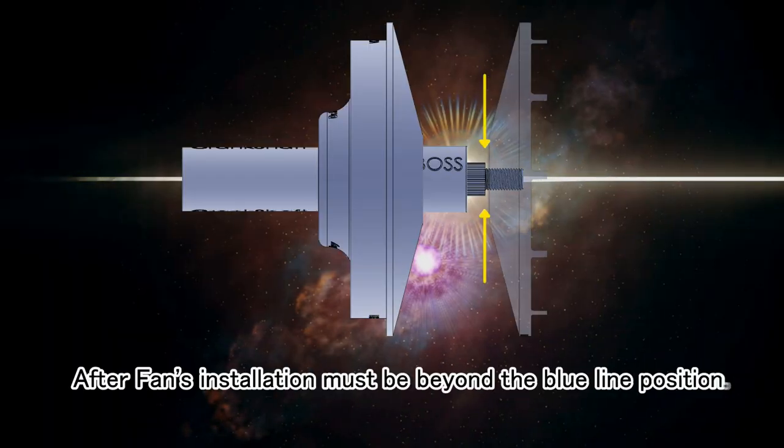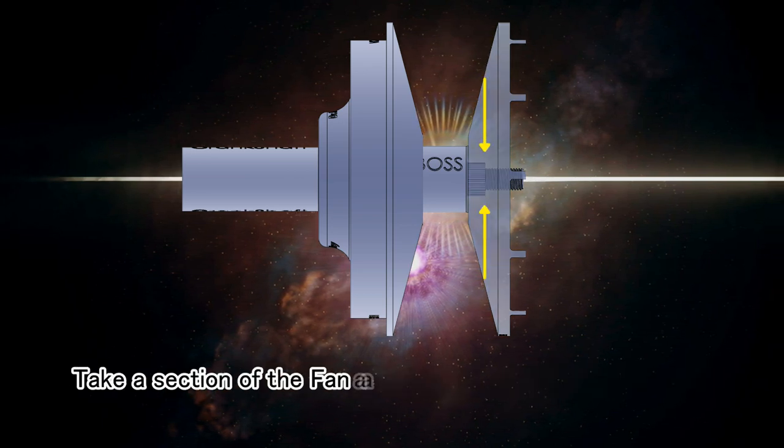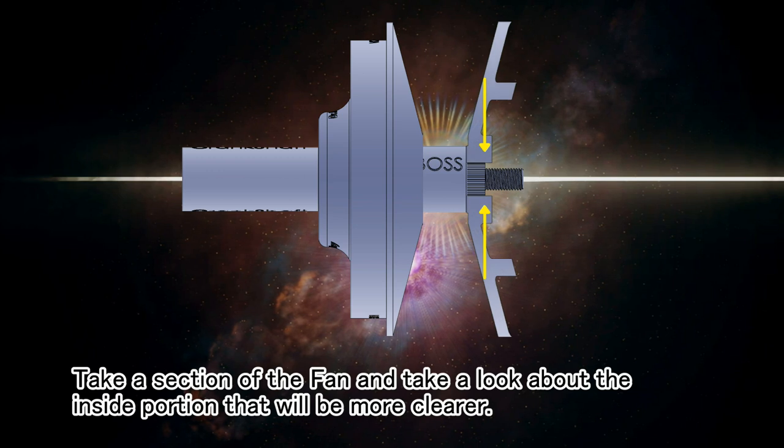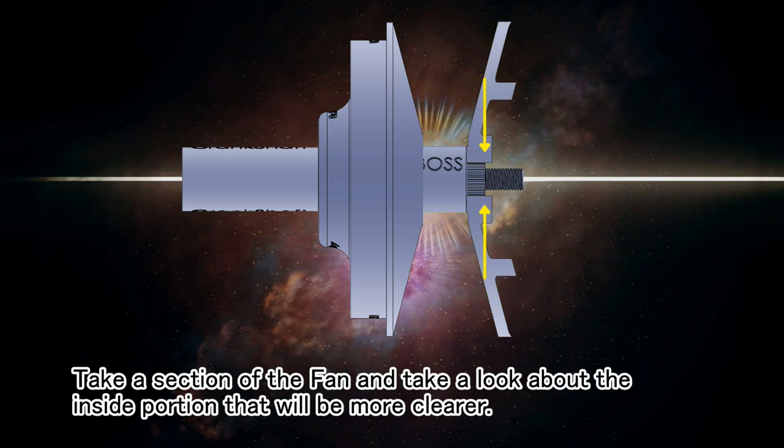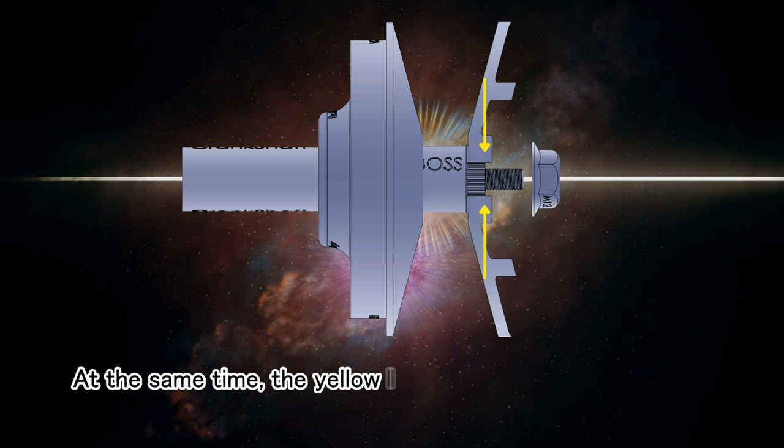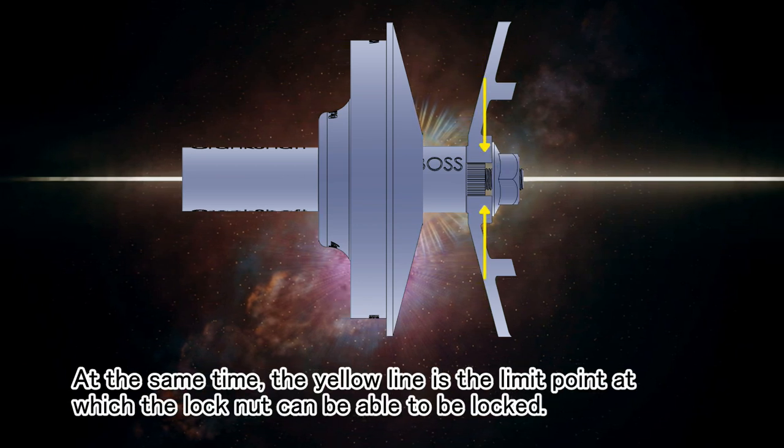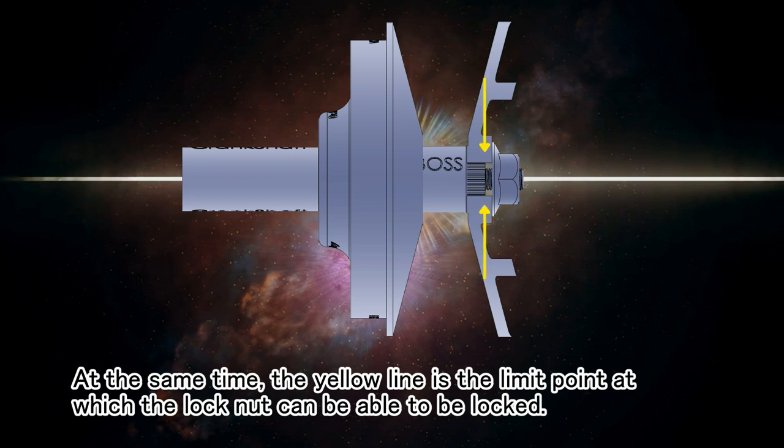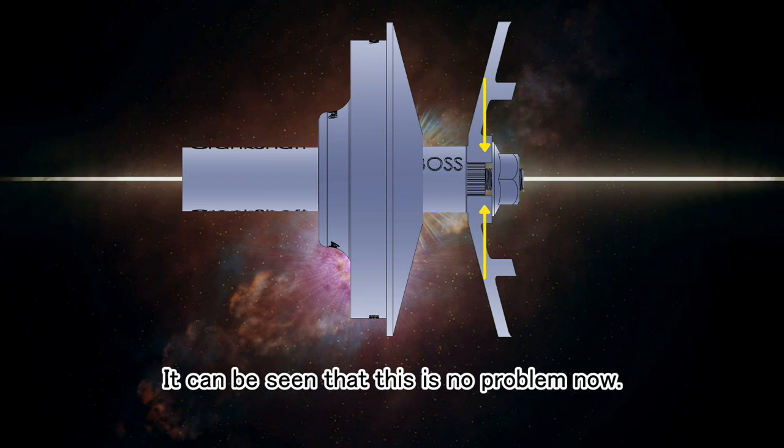After fan installation, it must be beyond the yellow line position. Take a section of the fan and take a look at the inside portion, that will be more clear. At the same time, the yellow line is the limit point at which the lock nut can be able to be locked. It can be seen that this is no problem now.